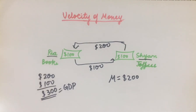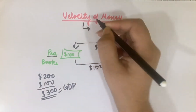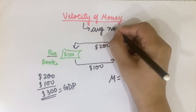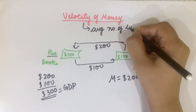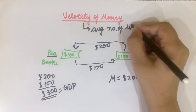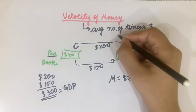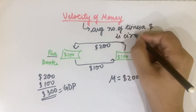Now let's define the velocity of money. We can say it is the average number of times a dollar is circulated in an economy.